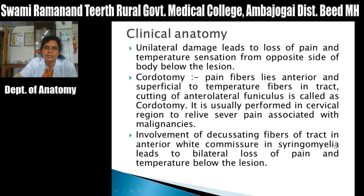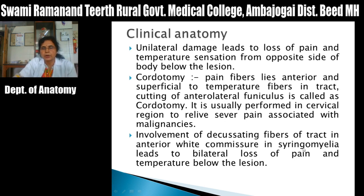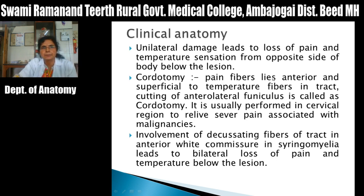Involvement of the decussating fibers of this tract in the anterior white commissure — anterior to the central canal — in case of syringomyelia leads to bilateral loss of pain and temperature below the lesion. Syringomyelia means there are cavities or cysts in the gray matter of the spinal cord around the central canal. As these cavities increase in size, they may cause pressure on the crossing fibers of the lateral spinothalamic tract, leading to loss of pain and temperature sensation.